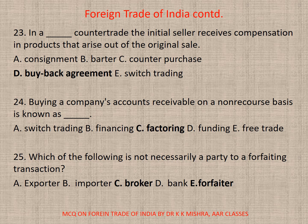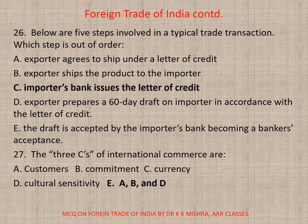Question 24: Buying a company's accounts receivable on a non-recourse basis is known as dash. The correct option is C — Factoring. Question 25: Which of the following is not necessarily a party to a forfeiting transaction? The correct option is C — Broker. Question 26: Below are five steps involved in a typical trade transaction. Which step is out of order? The correct option is C — importer's bank issues the letter of credit.